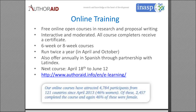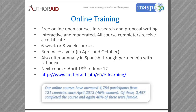AuthorAid also offers online courses — these are fully free, fully open online courses in research and grant proposal writing, offered twice a year. Our next course runs from April 18th to June 12th — an eight-week course. The first six weeks cover our standard AuthorAid writing and research content, and the last two weeks focus on how to write a grant proposal.